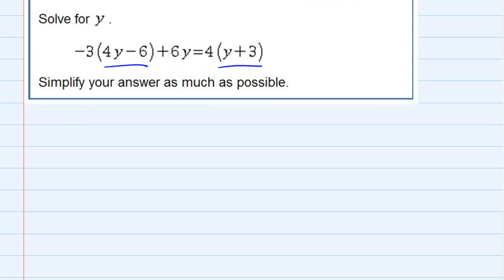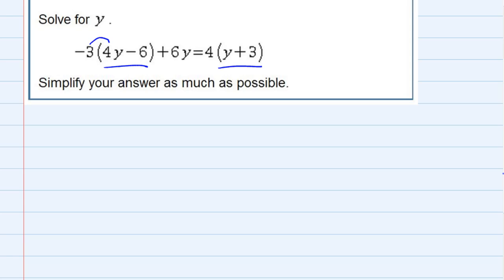Starting on the left, I want to multiply everything inside the parentheses by negative 3. That'll get rid of the parentheses. So, negative 3 times 4y is negative 12y. Negative 3 times negative 6 is positive 18. And then, since this 6y is not in the parentheses, I'm just going to bring it down. It doesn't get multiplied by the negative 3.